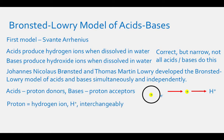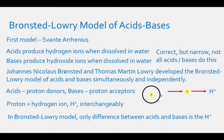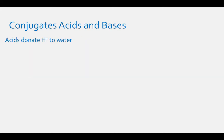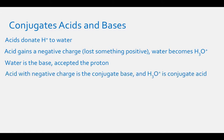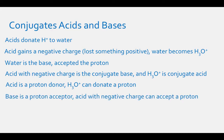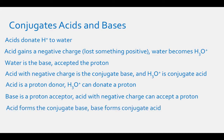In the Bronsted-Lowry model of acids and bases, the only difference between acids and bases is the H+ ion. An acid is something that can donate an H+ ion, sometimes to water. Then the acid gains a negative charge because it lost something positive, and the water becomes H3O+. In this case, the water is the base because it accepted the proton. The acid with the negative charge is the conjugate base of the reaction, and the H3O+ is the conjugate acid of the reaction. The acid forms the conjugate base, and the base forms the conjugate acid.